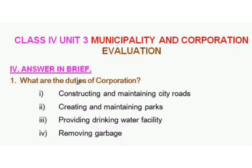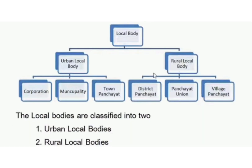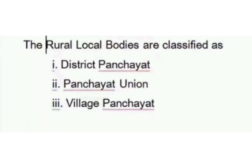Write the structure of local bodies. Local bodies are classified into two: urban local bodies and rural local bodies. Urban local bodies are divided into three: corporation, municipality, and town panchayat. Rural local bodies are divided into three: district panchayat, panchayat union, and village panchayat.